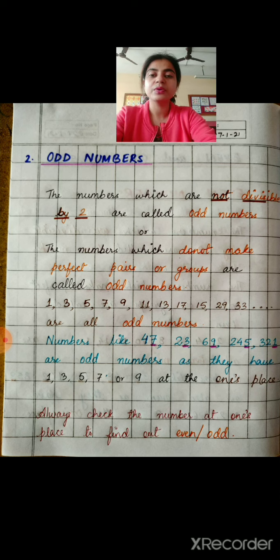For example, 1, 3, 5, 7, 9, 11, 13, 17, 15, 29, 33 and so on. All are odd numbers.